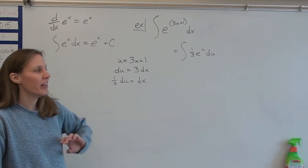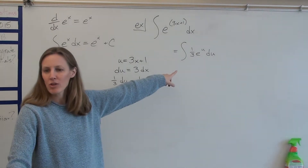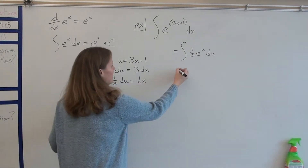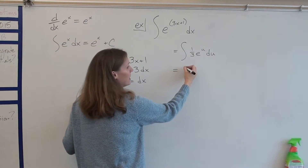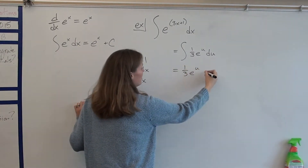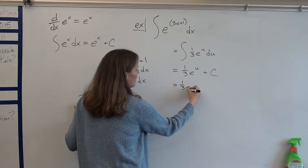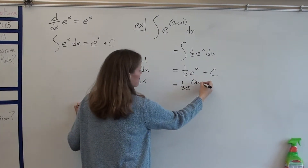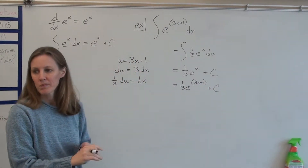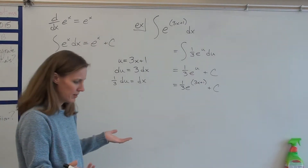Did y'all get the correct u, the correct du, and the correct rewriting of your integral? Good. So now the antiderivative of one-third e to the u is one-third e to the u plus c, which would be one-third e to the 3x plus 1 plus c. That's from the u.